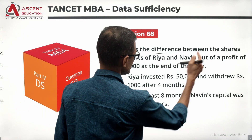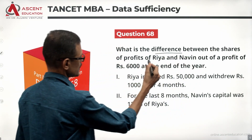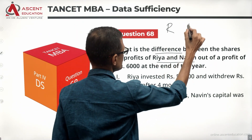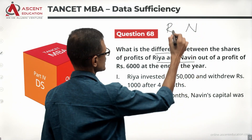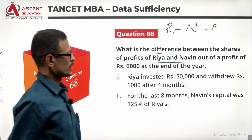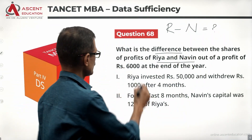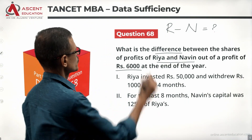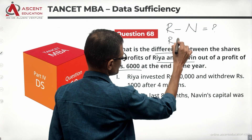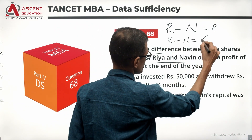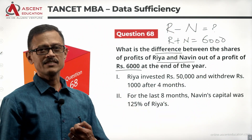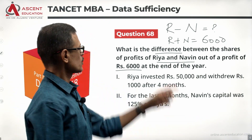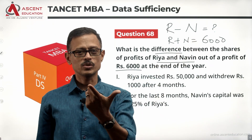What is the difference between the shares of profits of Rhea and Navi? Rhea would have profit for the year R rupees, Navi would have profit for the year N rupees. So R minus N is what they have asked, out of a profit of 6,000 at the end of the year. That's the profit made by Rhea and Navi together. Rhea could have been 4,000 and Navi could have been 2,000, so the difference is 2,000.